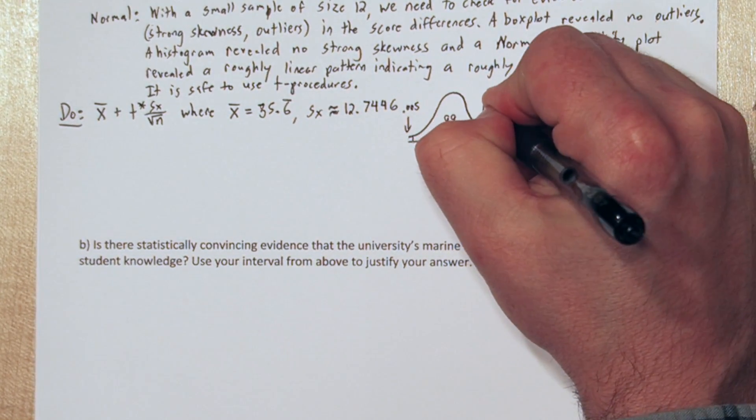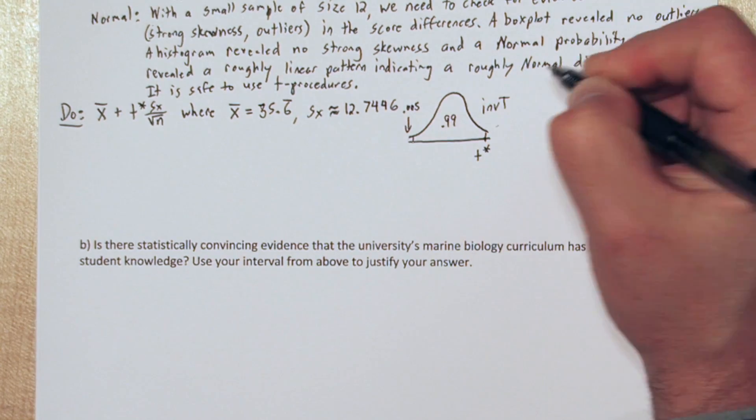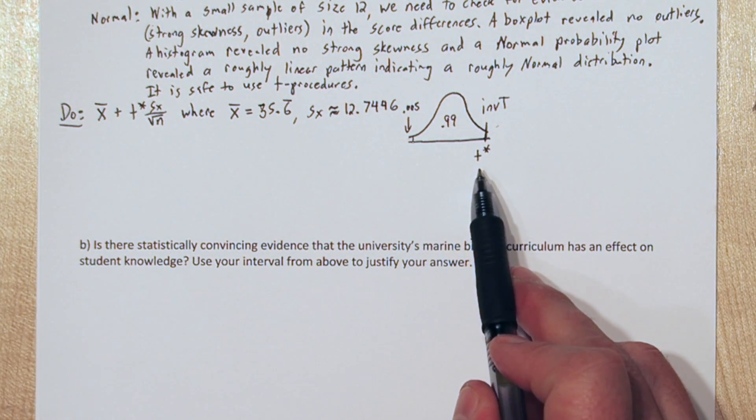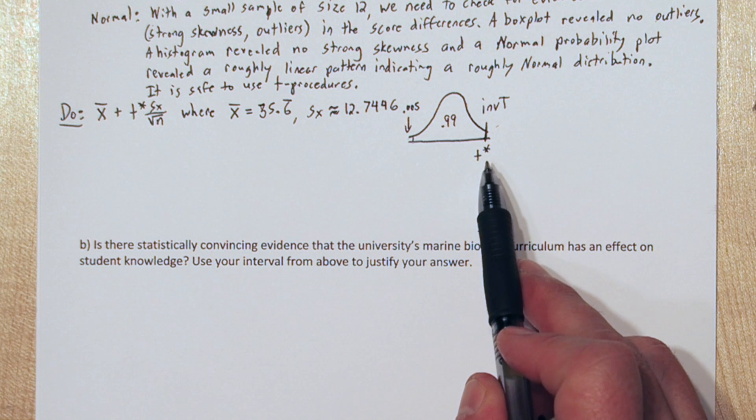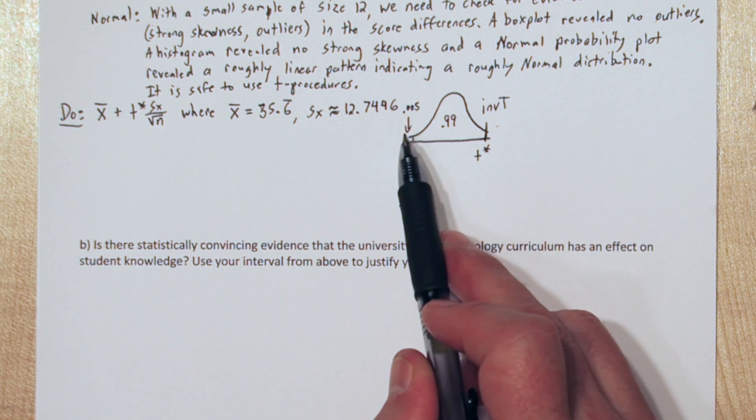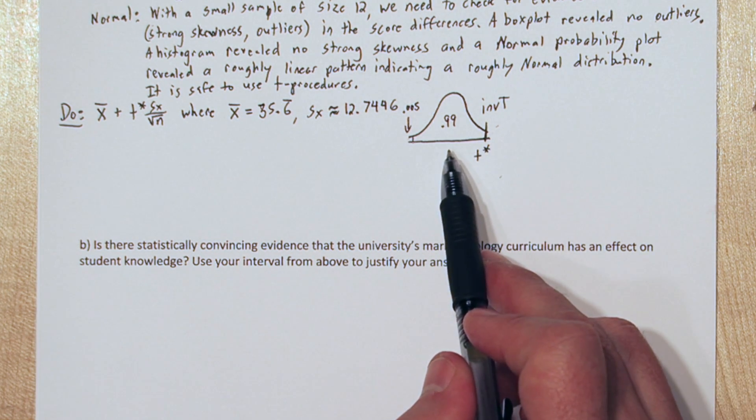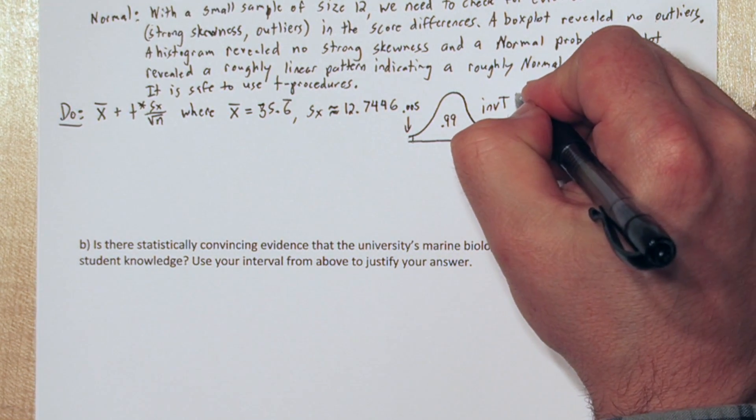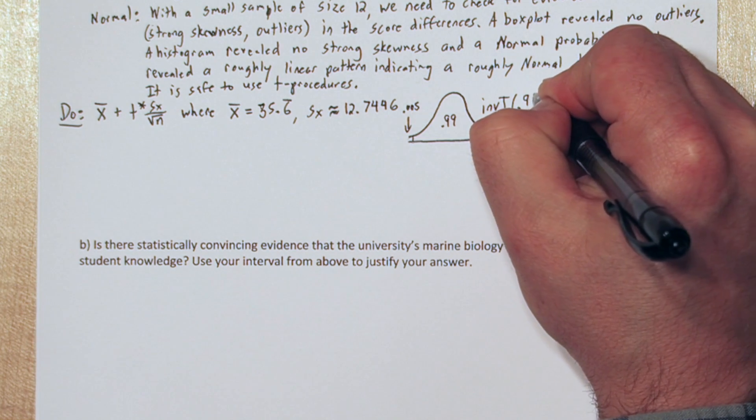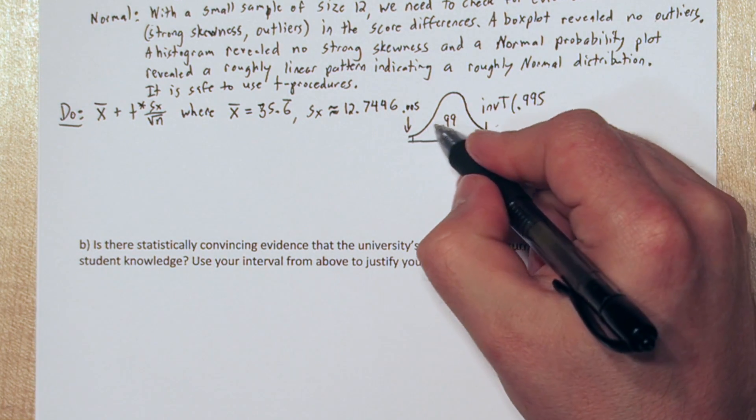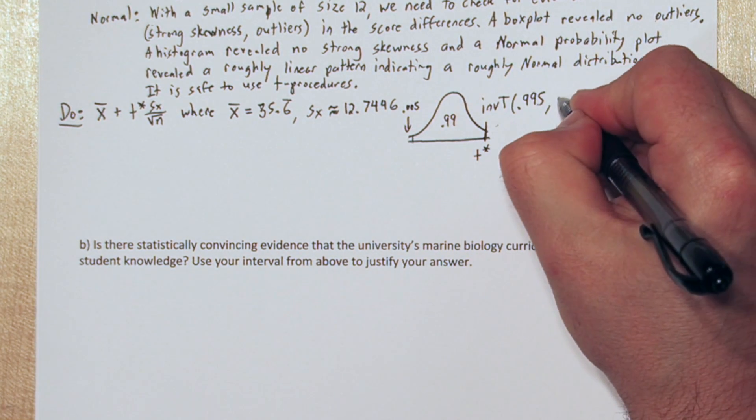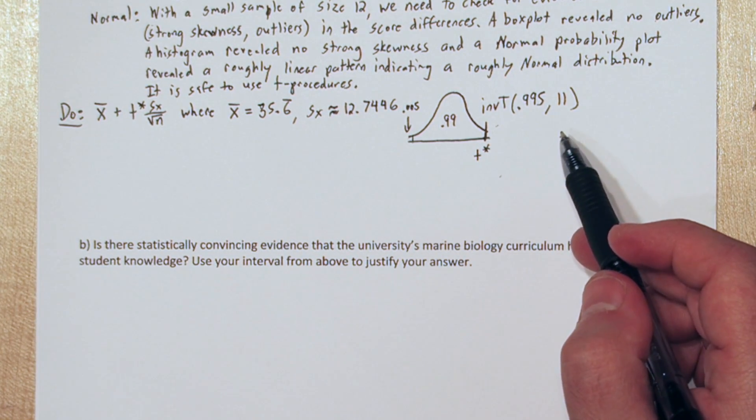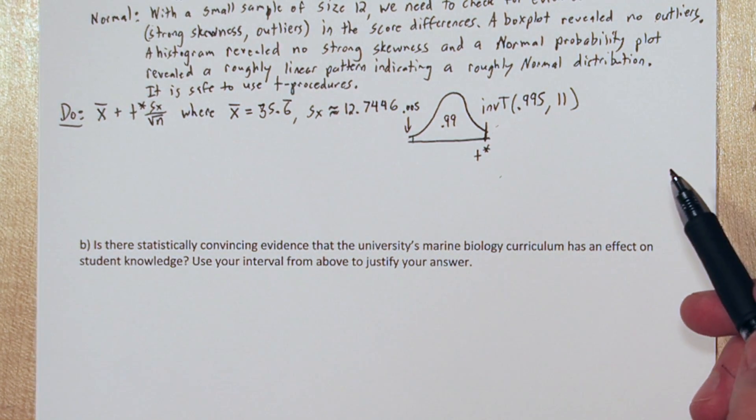The way the inverse t function works on the calculator is you have to feed it all the area to the left. So, to the left of this t star critical value is the 99% area plus the 0.005 area. So, we're going to say inverse t 0.995, those two values added, with 11 degrees freedom. Degrees freedom is just sample size minus 1. So, in this case, it's 12 minus 1, 11.